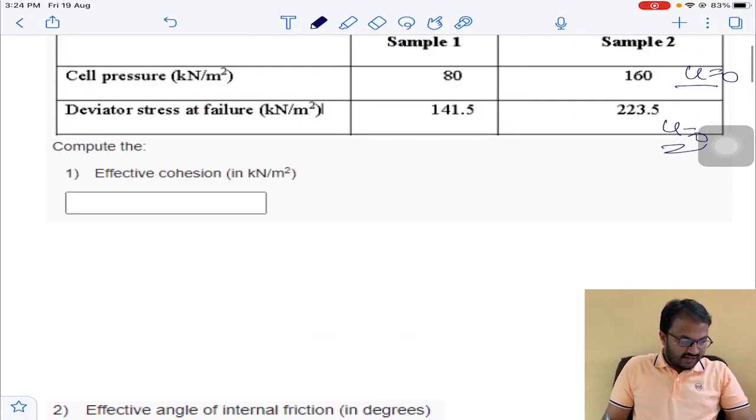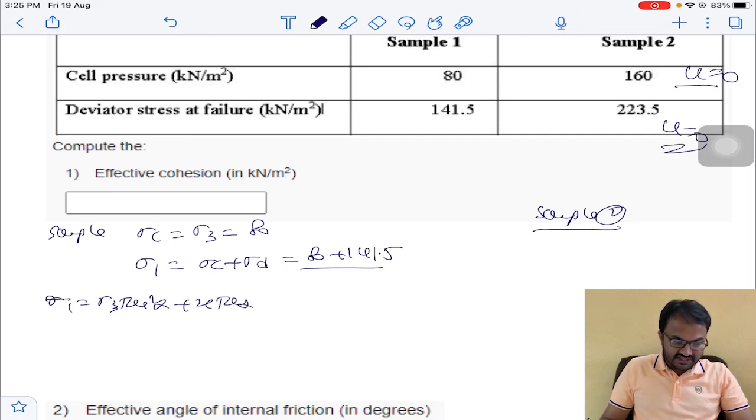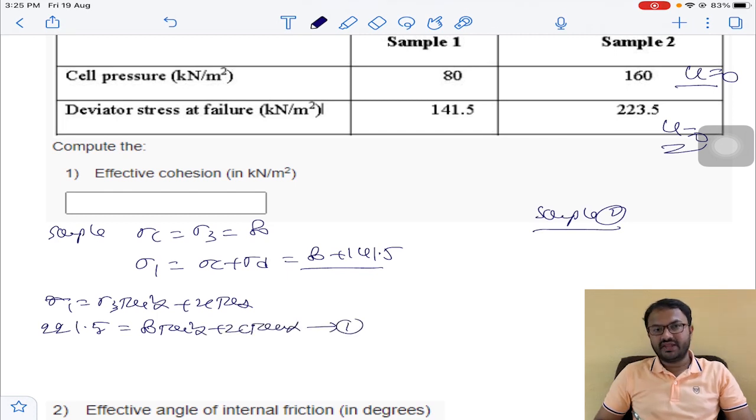According to the given data, sample 1: sigma C is equal to obviously it will become major minor principle, so sigma 3 is 80 and sigma 1 is equal to sigma C plus sigma T, that is 80 plus 141.5. We know sigma 1 is equal to sigma 3 tan square alpha plus 2C tan alpha. Sigma 1, this total summation will become 221.5 is equal to 80 tan square alpha plus 2C tan alpha. This is equation number 1.